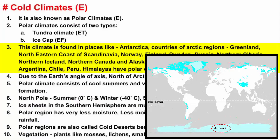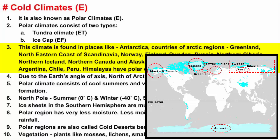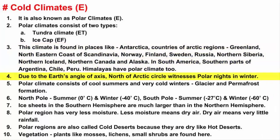Polar Climates are found in Antarctica, Arctic region countries like Greenland, the extreme northeastern coast of Scandinavia including Norway, Finland, Sweden, Russia, large areas of Northern Siberia, Northern Iceland, northern parts of Canada and Alaska. In South America, southern parts of Argentina, Chile and Peru have Polar Climates. Even the Himalayas have Polar Climates.